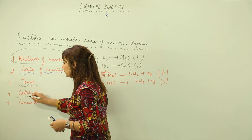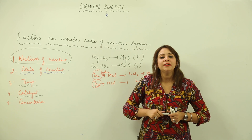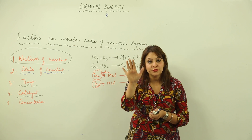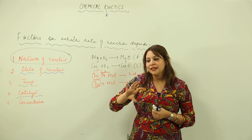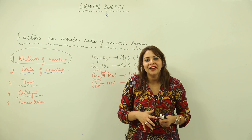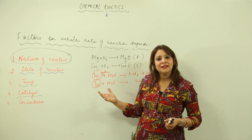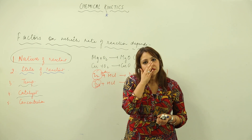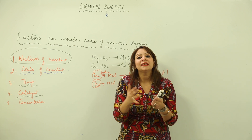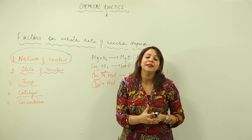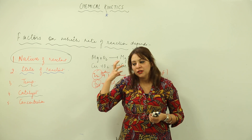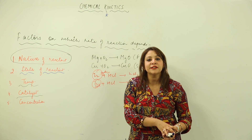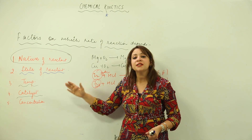The fourth factor is catalyst. A catalyst is a substance that affects the rate of reaction — it can increase or decrease it, though in many reactions we use it as a promoter rather than an inhibitor. More precisely, a catalyst is a chemical substance which affects the rate of reaction without getting consumed — meaning there is no change in its form or amount after the reaction.